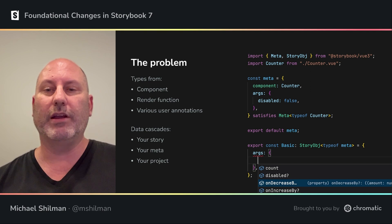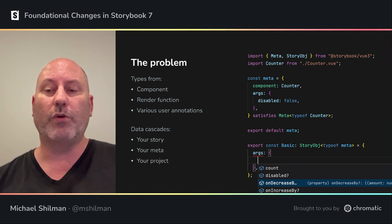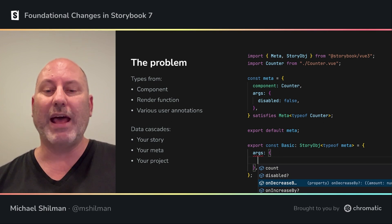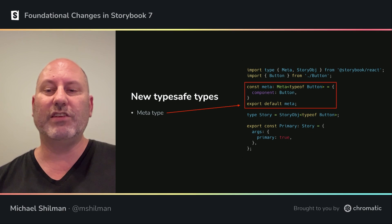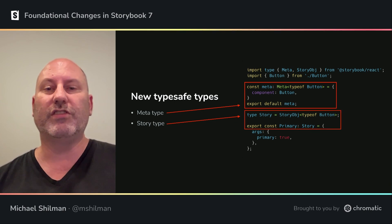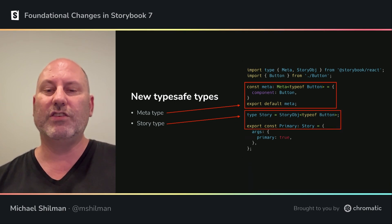Storybook provides a lot of flexibility for writing stories. Types can come from your component, from your story's render functions, and from various metadata like arg types. Component inputs can be spread across your stories, your meta, and your project annotations. To address these problems, we've improved the meta type for the default export, and we've also introduced the story object type for CSF3 object stories. These are smart types that provide type safety and auto-completion.